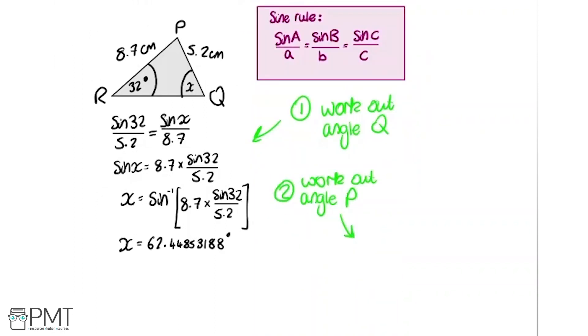Now our second step is we're going to work out angle P, this remaining angle. We can do that because we know all of the angles in a triangle add to 180 degrees. So we've got two of them, so we can work out the third one. I'm going to label this one up here angle Y. So Y equals 180 minus 32, subtracting the other angle we just worked out, 62.448 dot dot dot. It's good if you store this long number in your calculator to make it as accurate as possible. That gives us that this angle is 85.551468 12 degrees.